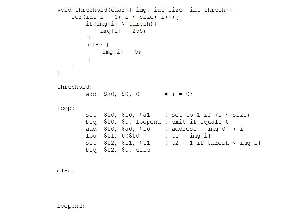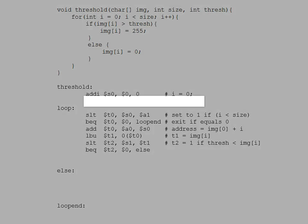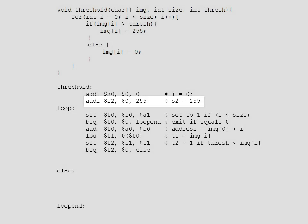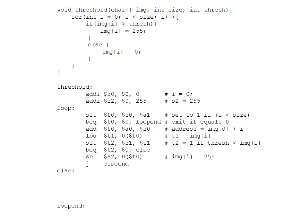In the if case, we need to store 255 into the ith entry of the image. Since we can't store an immediate value with a store command in MIPS, we add an instruction at the top to store 255 into register s2. Then we do a store-byte of s2 (which holds 255) into the address of image[i] stored in t0. Once the store is done, we're finished with the if, so we add a jump instruction to skip over the else, with a label marking the end of the else.